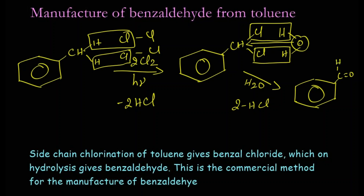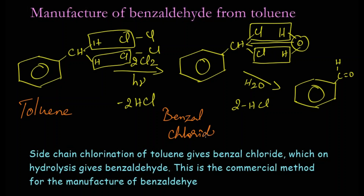Let's write the names for the structures. This is toluene; on chlorination it gives benzal chloride. Benzal chloride on further hydrolysis with the elimination of two HCl gives benzaldehyde. This is the side chain chlorination of toluene — the reaction takes place in the methyl group side chain, not in the benzene ring.